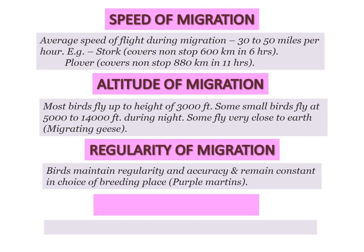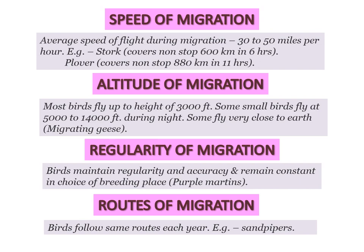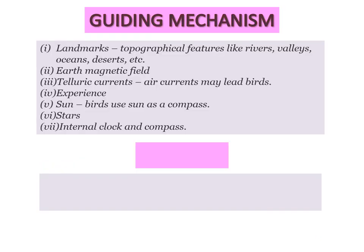Regularity of migration: birds maintain regularity and accuracy and remain constant in their choice of breeding place — they return every year. The route of migration is also fixed; they follow the same route every year. So, guiding mechanism.